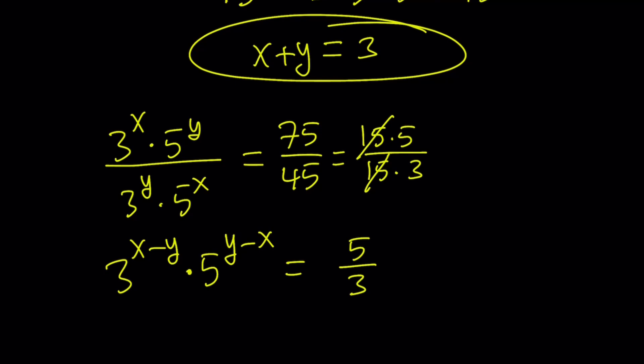So here's what I can do. Even though the exponents are different, they're related. How? x minus y and y minus x are opposites, which means I can use the properties of negative exponents. I can negate one of them and flip. Flip and negate or negate and flip.